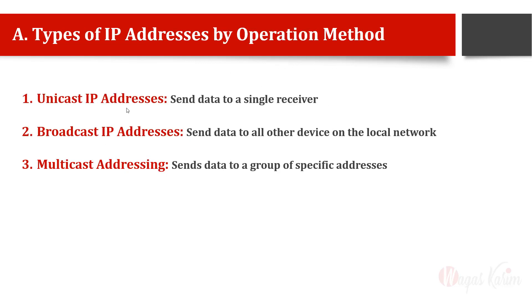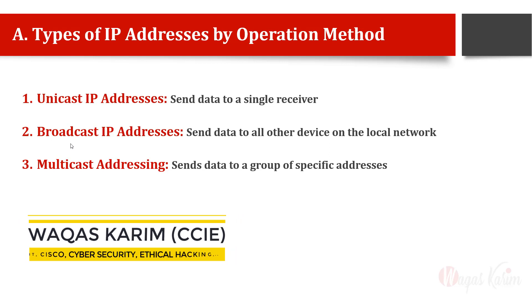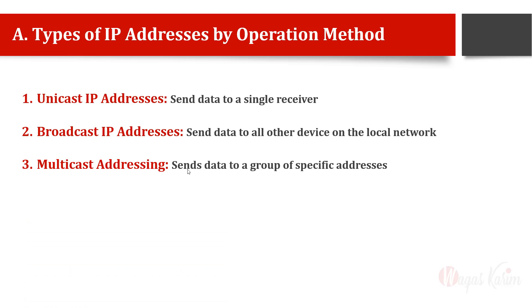The first classification is based on the operation method. In terms of operation, there are three types of IP addresses: unicast, broadcast, and multicast. Unicast means one-to-one — send data to a single receiver. Broadcast means send data to all devices. Multicast means send data to a specific group of devices. For example, unicast is like sending a message directly to one person, broadcast is sending a message to everyone at once.